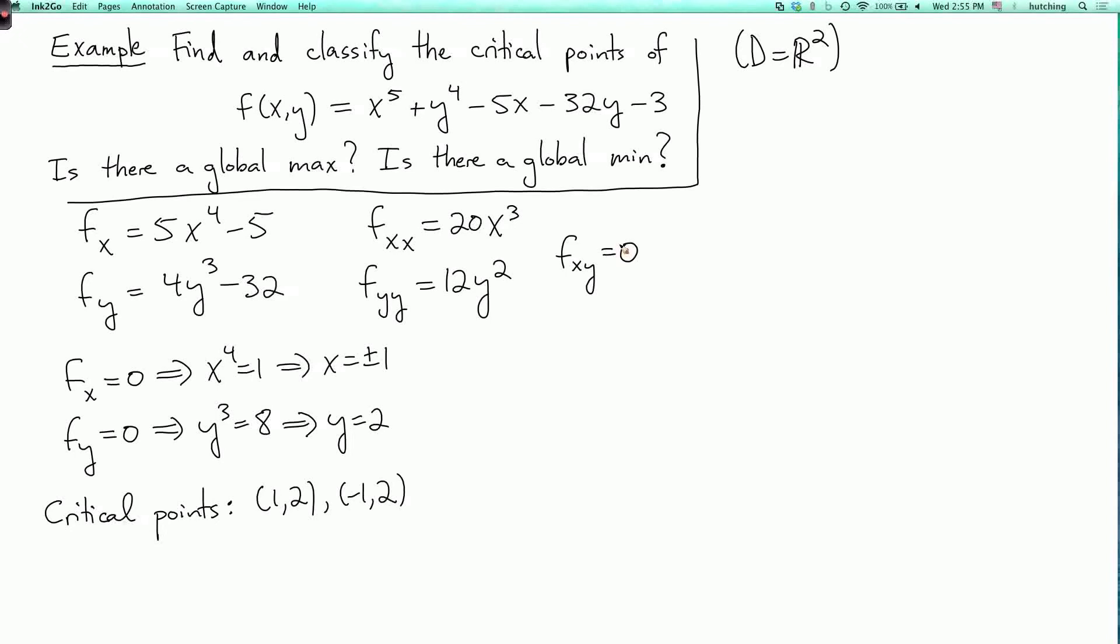Now let's analyze the critical point 1 comma 2. d is the determinant of the matrix of partial derivatives. I have 20 times 1 cubed, which is 20, the off-diagonal terms are zero, and then I have 12 times y squared, which is 12 times 4, which is 48. This is positive, and the diagonal entries are also positive, so this is a local minimum.